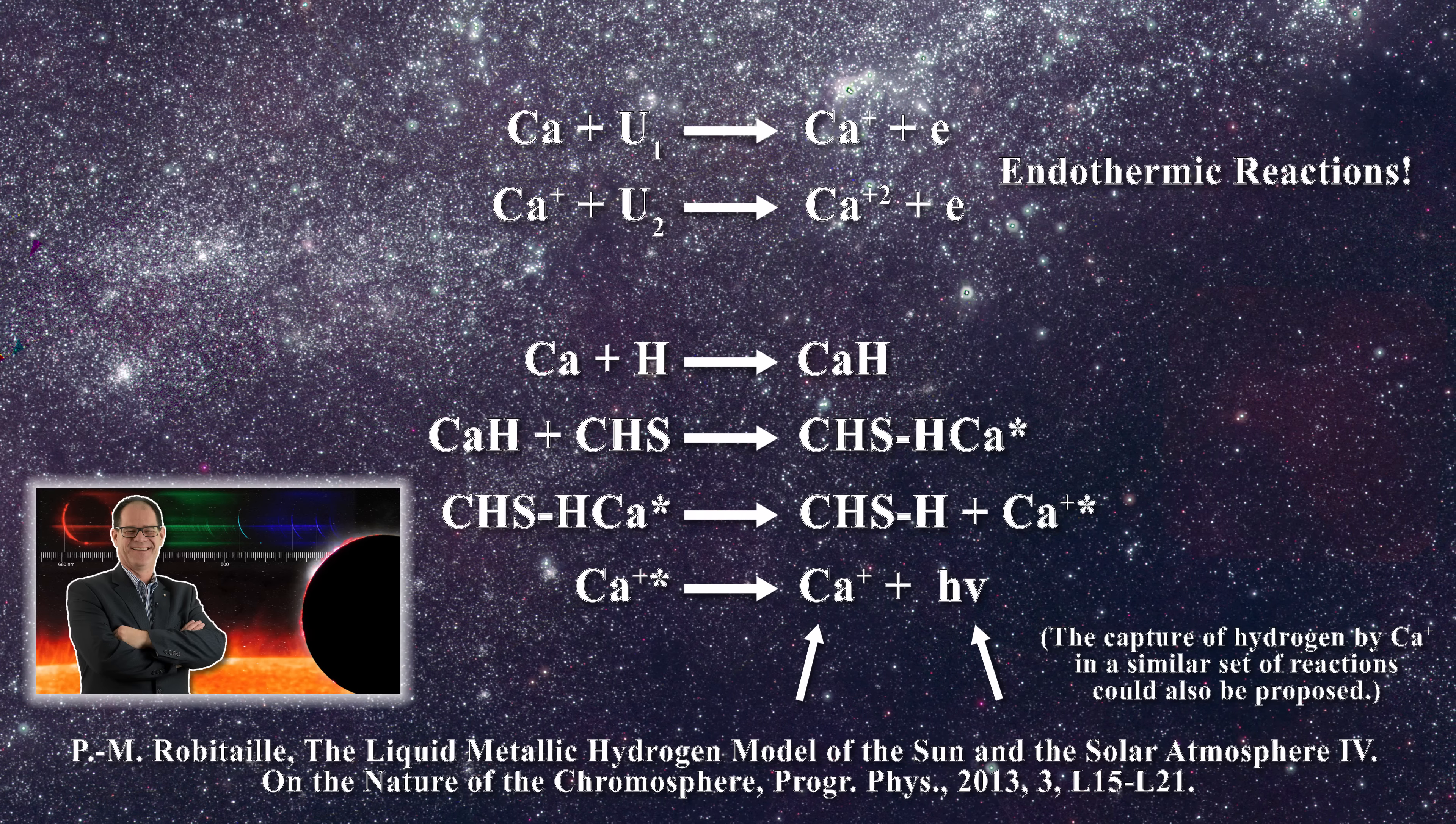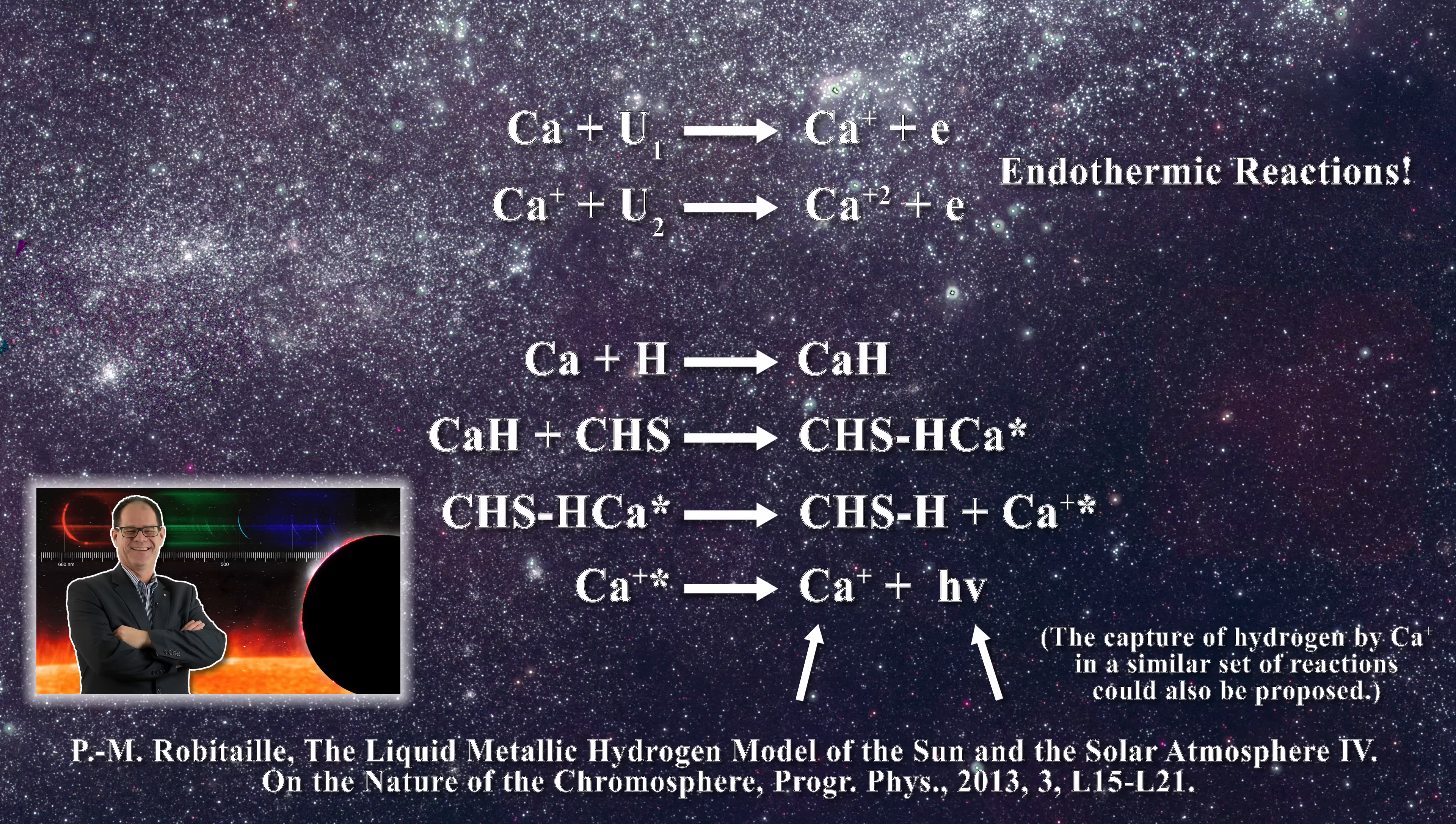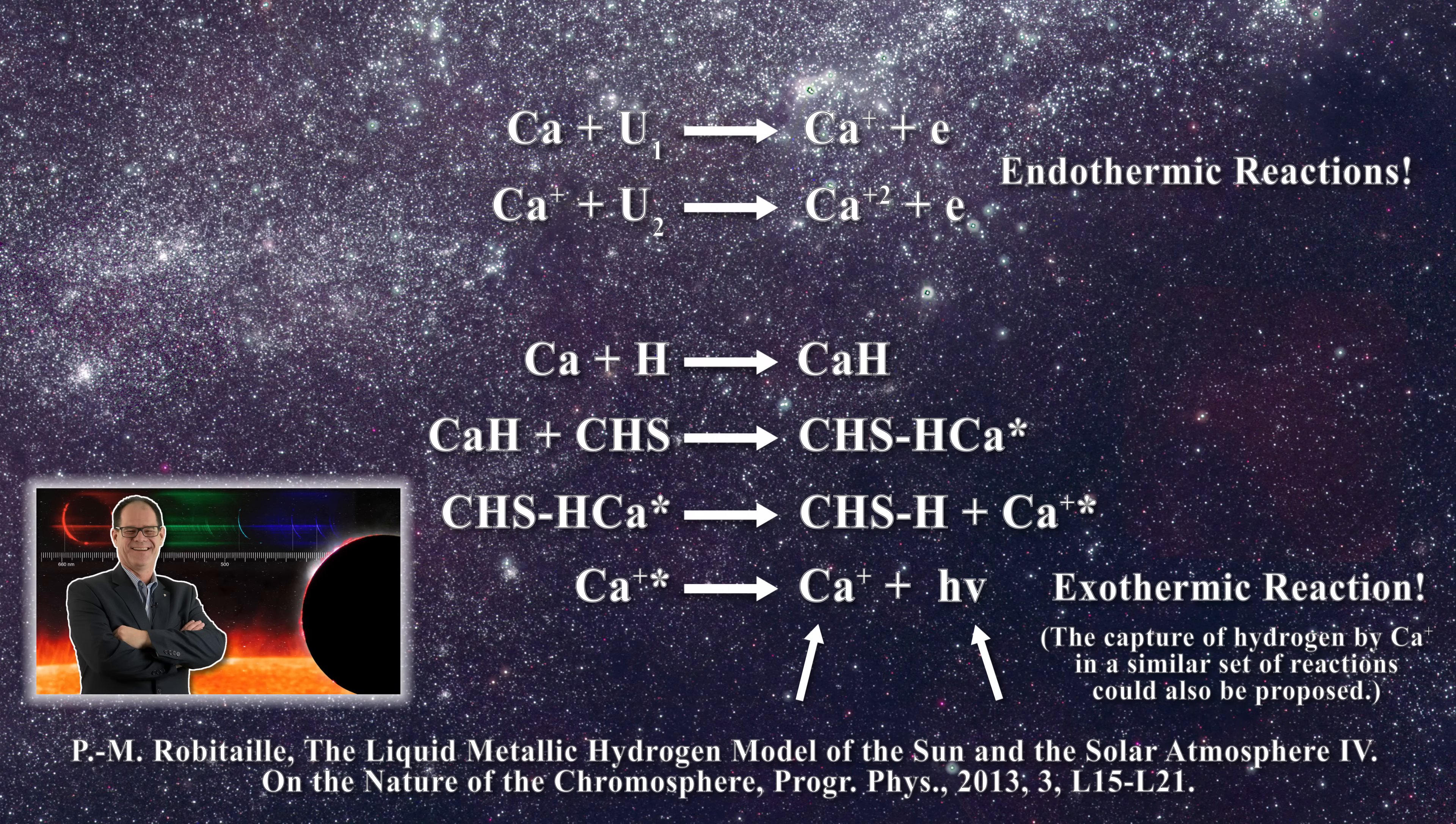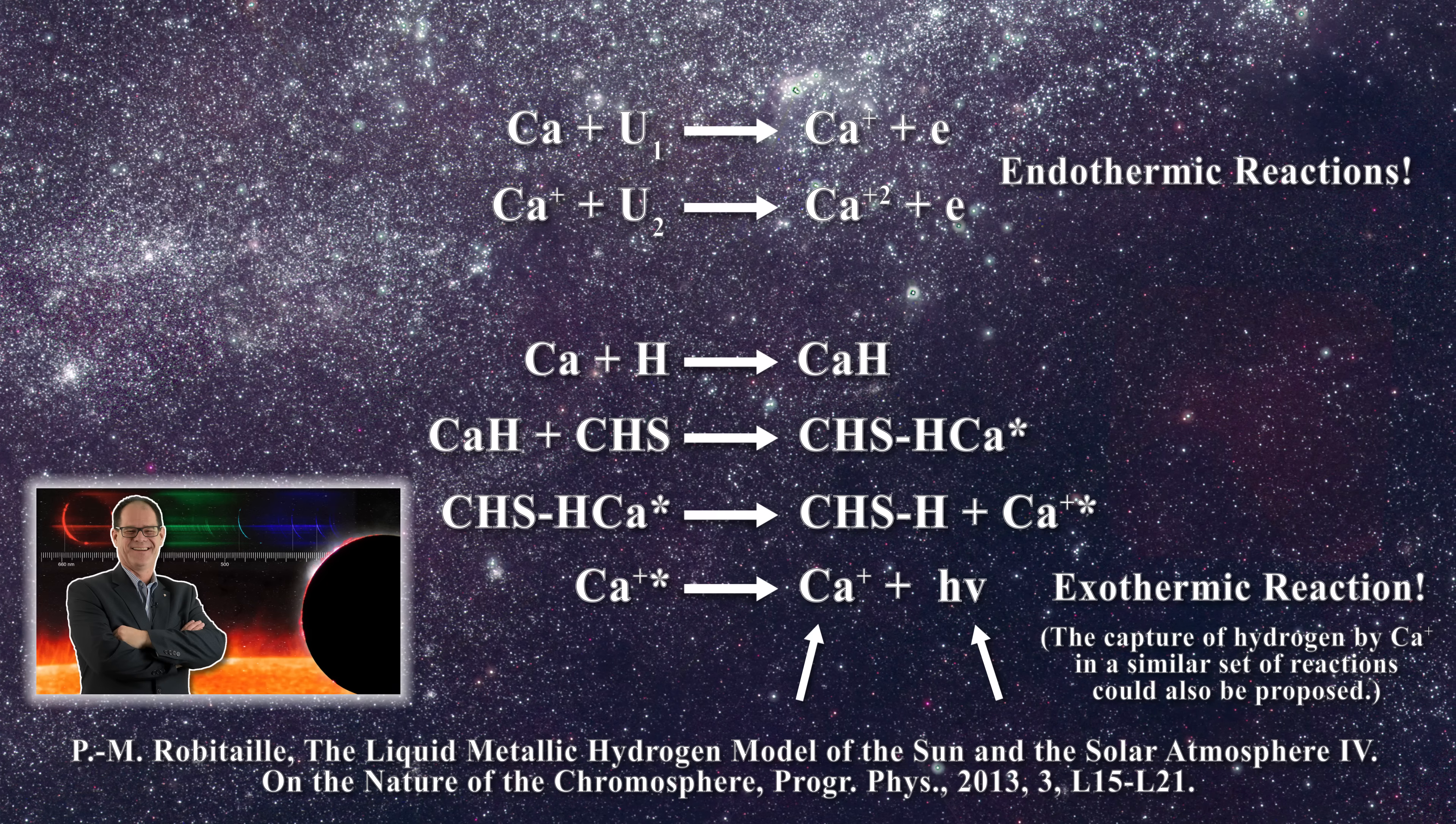Such reactions represent the most reasonable means of accounting for the emission lines in the chromosphere. These lines indicate that we are dealing with exothermic processes in this region of the Sun. The emission lines were unlikely to have been produced by random processes, as the standard model advocates.